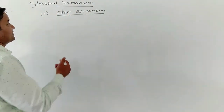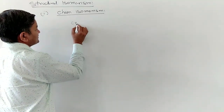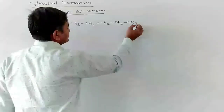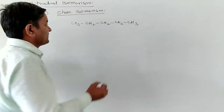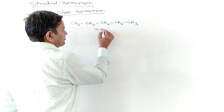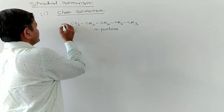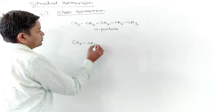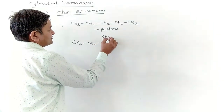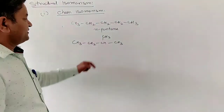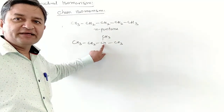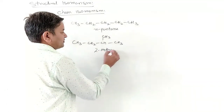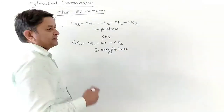For example, we have a compound with structure CH3-CH2-CH2-CH2-CH3. This is normal pentane. Similarly, we have CH3-CH(CH3)-CH2-CH3, which is 2-methylbutane. Both have the same molecular formula C5H12 but different structures.